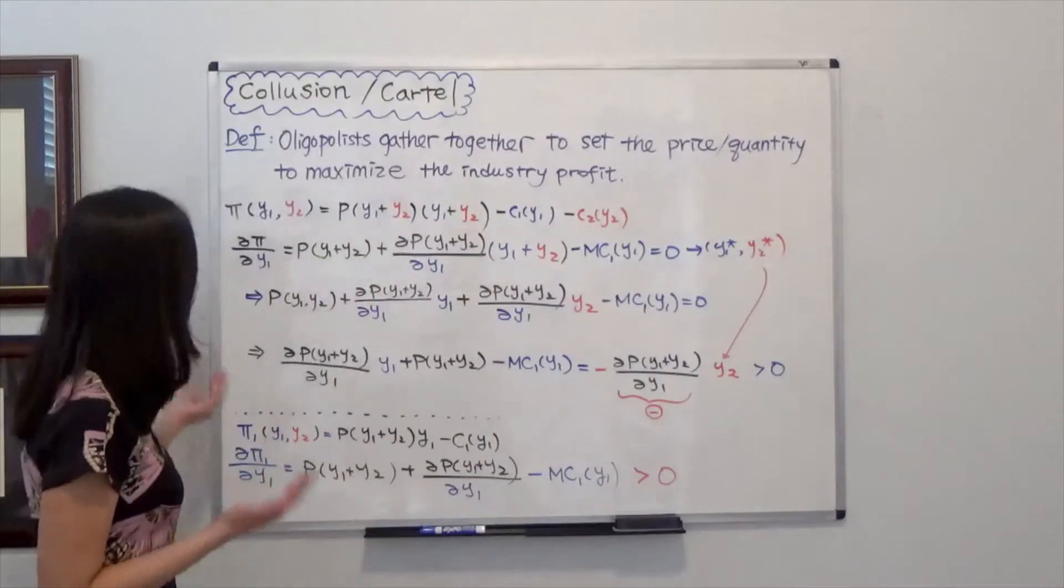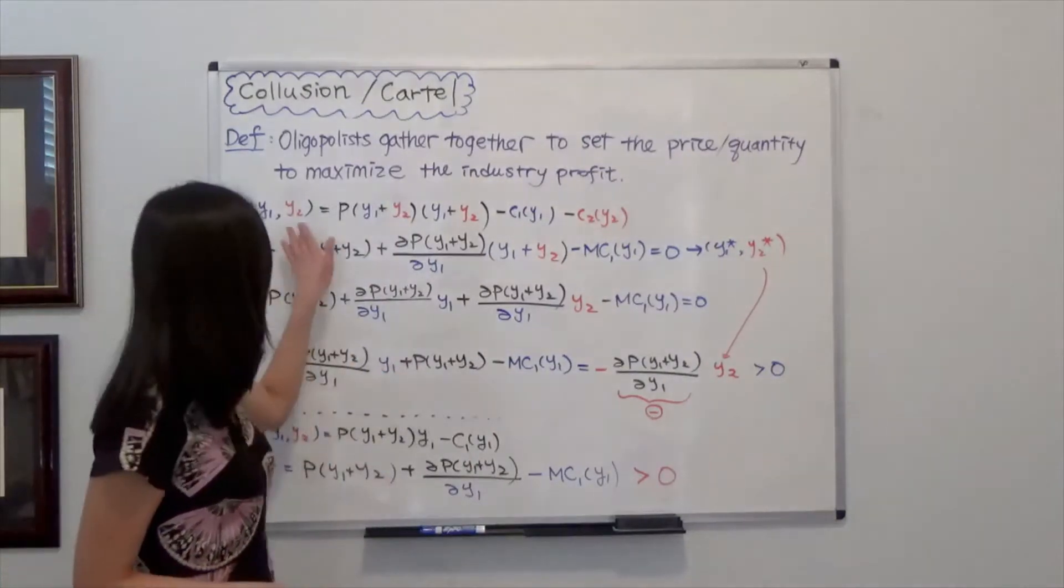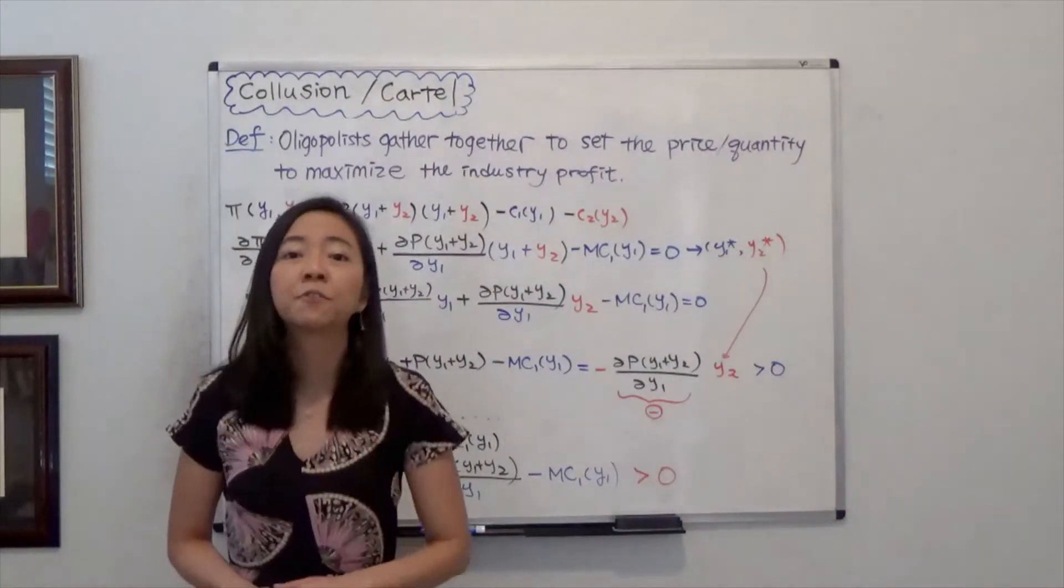Here we have a simple example. In this industry, we have only two firms, firm 1 and firm 2.